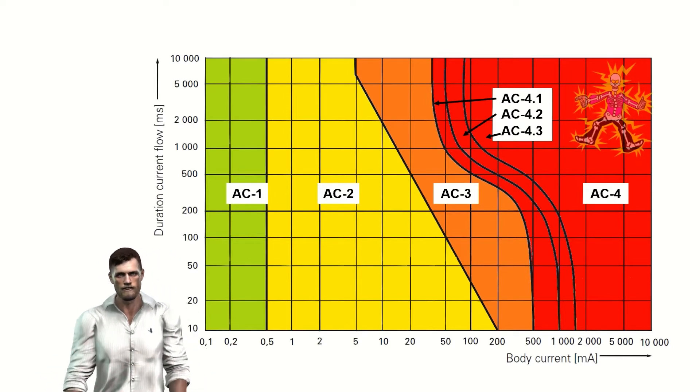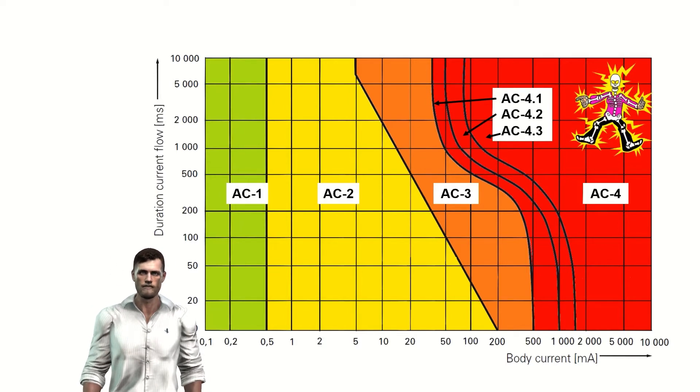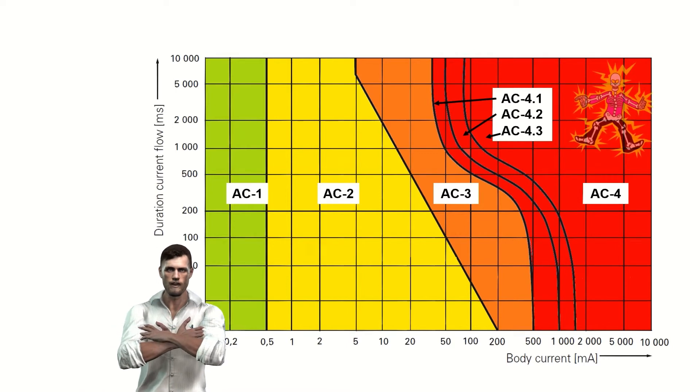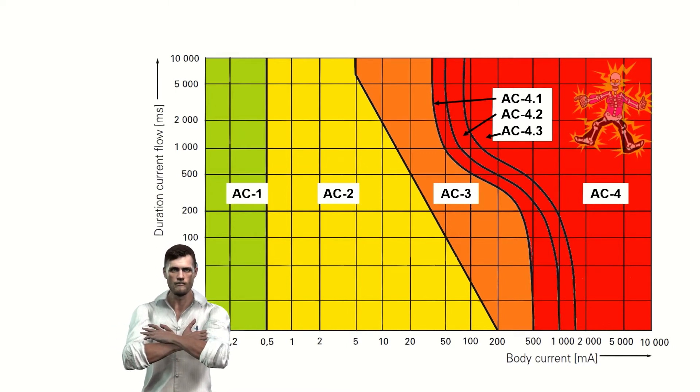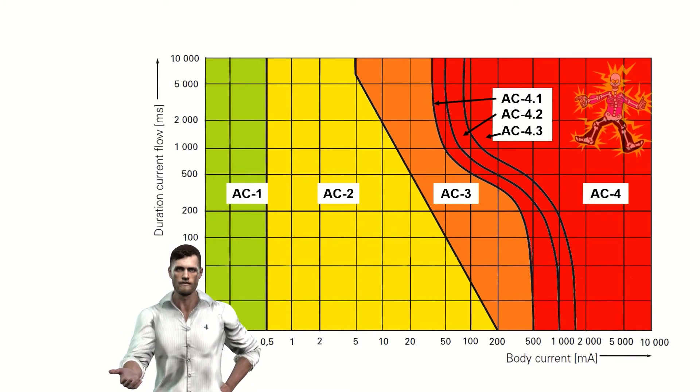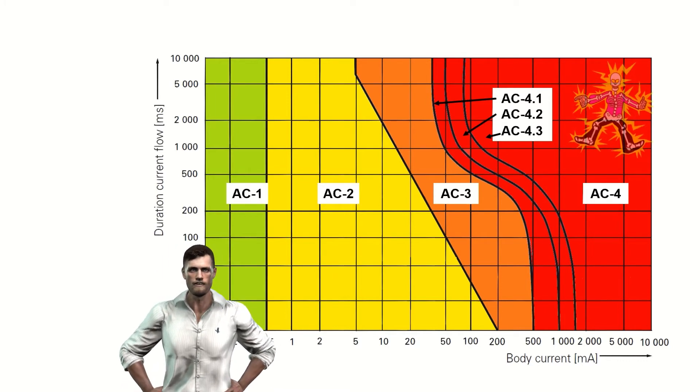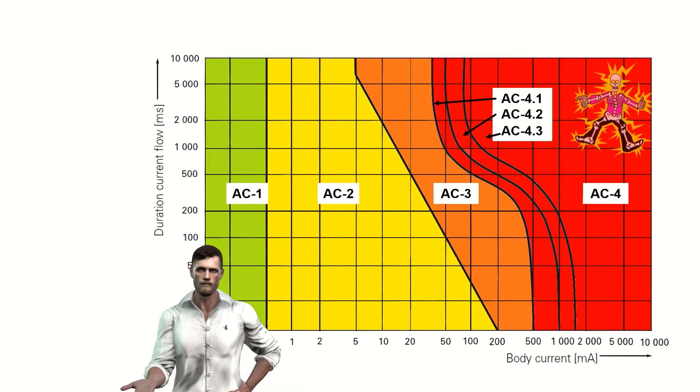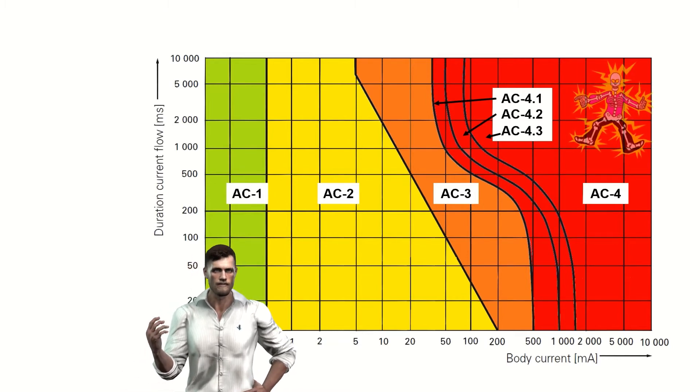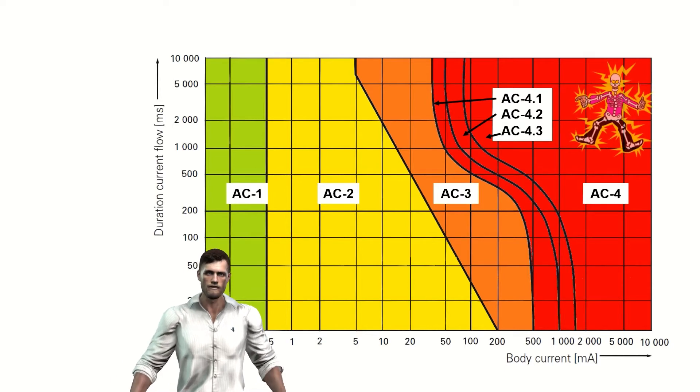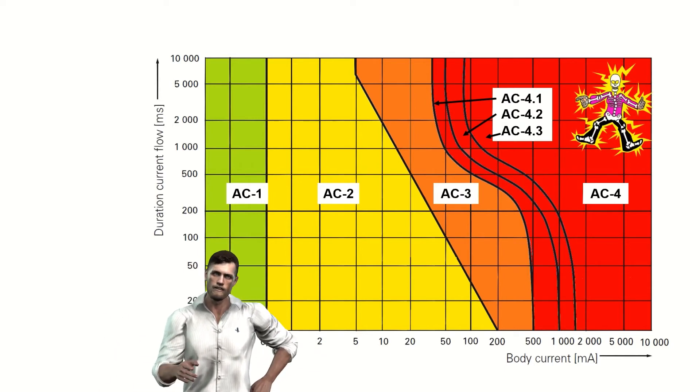In zone AC4, we already have the possibility of suffering irreversible effects. For example, in zone AC41, we would have up to a 5% probability of suffering cardiac fibrillation. In zone AC42, up to 50% and in zone AC43, more than 50%. Therefore, the objective of the differential protection or RCD is to open the circuit before we can enter the most dangerous zone, that is the AC4 zone, where as we have mentioned, the effects can already be irreversible.